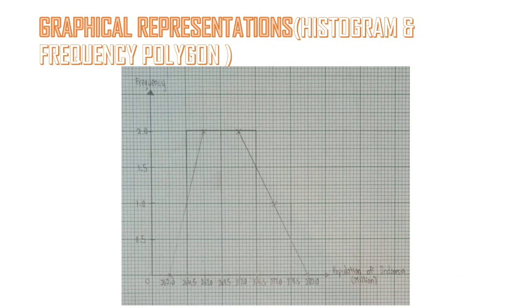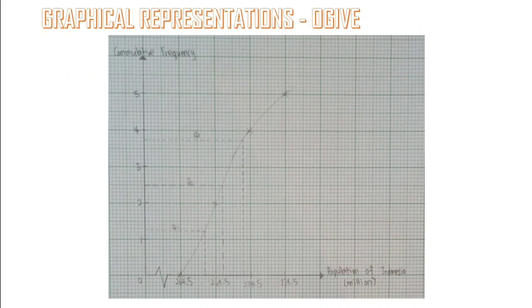For graphical representation, the histogram and frequency polygon have the x-axis showing population of Indonesia in millions and the y-axis showing frequency in years. The ogive graph also shows cumulative frequency on the y-axis and includes the first quarter, second quarter, and third quarter for the interquartile range.